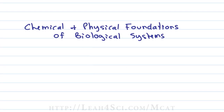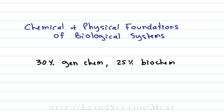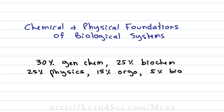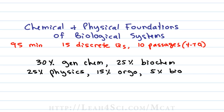The first section on the exam is the Chemical and Physical Foundations of Biological Systems. This is what you can think of as the old chem/physics section, except that it covers 30% general chemistry, 25% biochemistry, 25% physics, 15% organic chemistry, and 5% biology. This section is 95 minutes long and includes 15 discrete questions and 10 passages with 4 to 7 questions each.